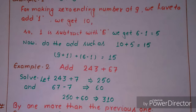Let us add example two: 243 plus 67. To make a zero-ending number of 243, we have to add 7, so 243 plus 7 equals 250. That 7 is subtracted from 67, giving 60. Now we can add these numbers easily: 250 plus 60 equals 310.